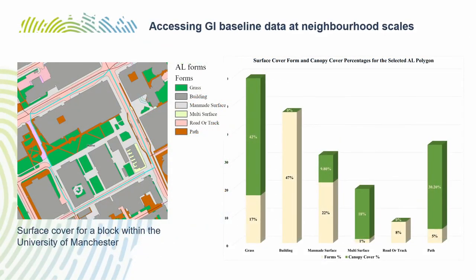These images show the data at the neighborhood scale. The image on the left shows the polygon that was highlighted in light blue on the previous slide. It shows the different surface cover forms contained within it, and the bar chart quantifies that data — this is the type of data you'll be able to access through the GI Explorer. It shows, for example, that nearly 40% of the paths in that space have got canopy cover, providing important climate change adaptation functions such as shading and rainwater capture. A user could also select a number of polygons — for example, related to a park — and gain the GI data on that space.